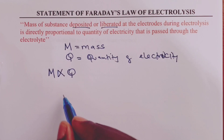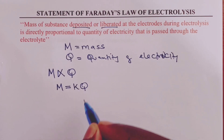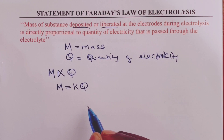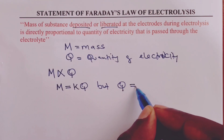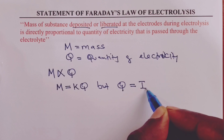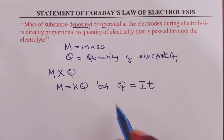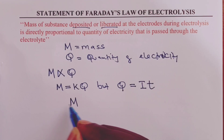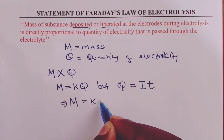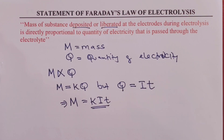In mathematics, if we remove the symbol of proportionality, we introduce a constant K. So M is equal to KQ. But from chemistry, we know that quantity of electricity is given by current in amperes, that is I, multiplied by time T in seconds. So if we replace Q with IT in this relation, then we end up having M is equal to KIT as the mathematical relation for Faraday's law.